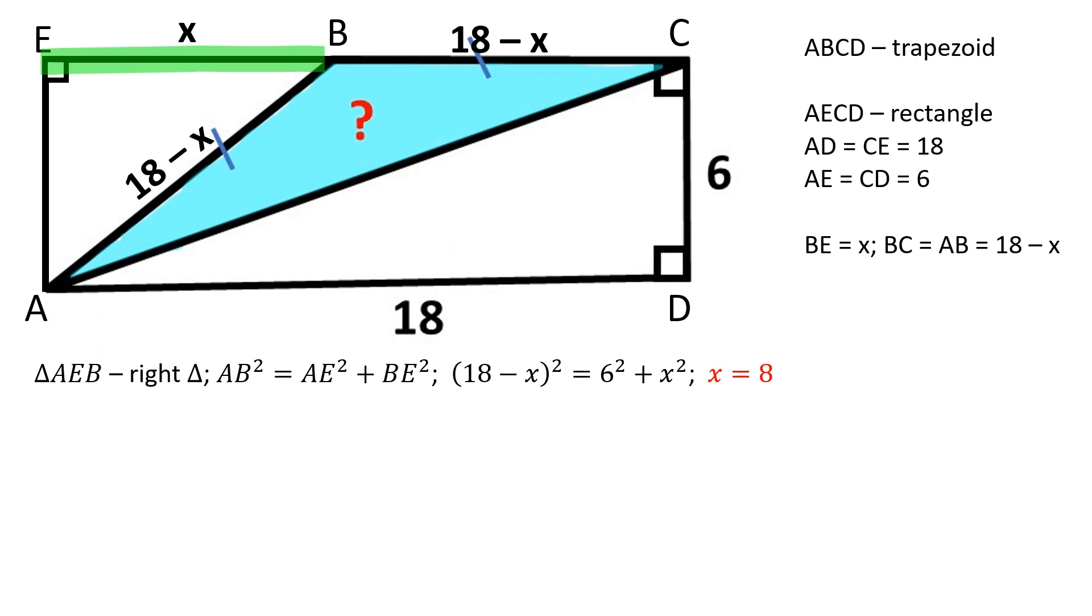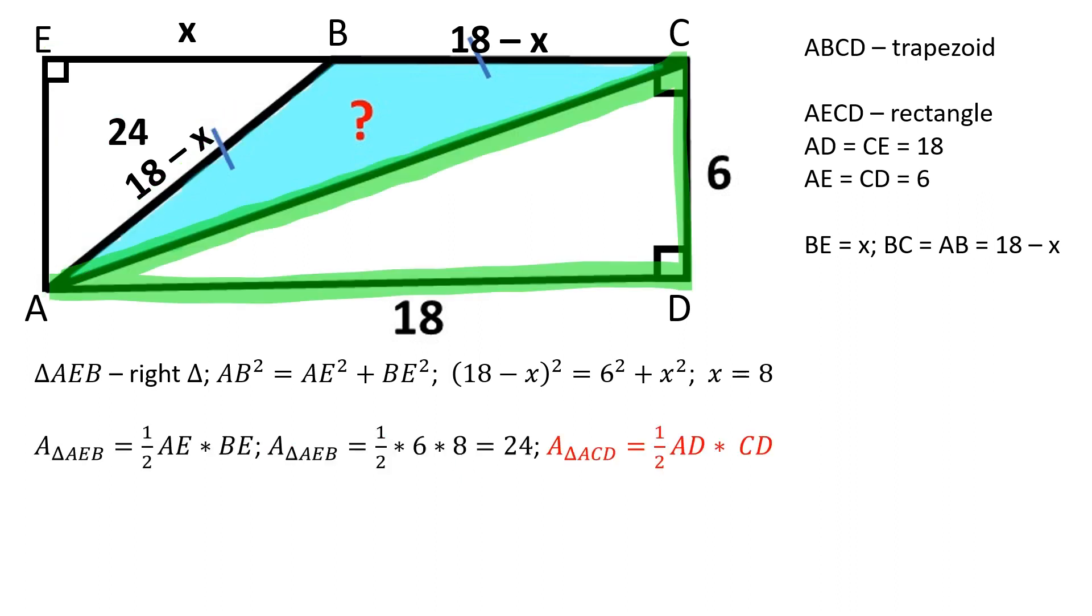The full explanation of how I ended up at this equation can be found in the description below. The area of a right triangle is equal to half the product of its legs. The area of triangle AEB is equal to half the product of AE and BE, which is 24 square units. The area of triangle ACD is equal to half the product of AD and CD, which is equal to 54 square units.